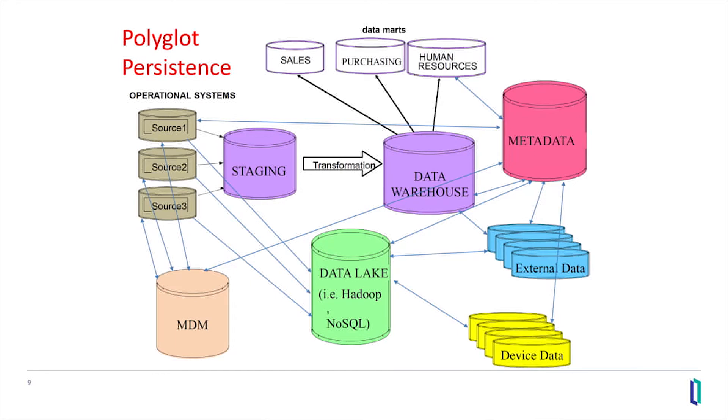Almost any time you are doing data integration — whether working in data warehouses, connecting data lakes, data swamps, or handling analytical reporting workloads — you are stitching together multiple data stores. This picture of an operational database that also has reporting is what's traditionally called HTAP, hybrid transaction and analytical processing. Many people have implemented this as multiple databases with copies of the data between them.